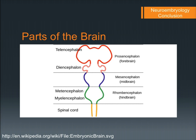Those brain parts differentiate further: the forebrain gives rise to the telencephalon, which is the cerebrum, and the diencephalon, which is the thalamus and hypothalamus. The midbrain stays as one section. The hindbrain develops into the metencephalon — giving the cerebellum and pons — and the myelencephalon, which is the medulla oblongata. At the bottom is the spinal cord, which travels the length of the body.